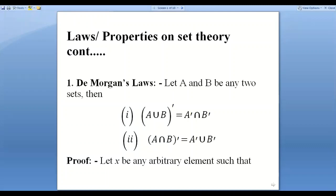According to the principle of duality, in the same way, De Morgan's second law states: (A intersection B)' is equal to A' union B'. Now let X be any arbitrary element to prove these laws.